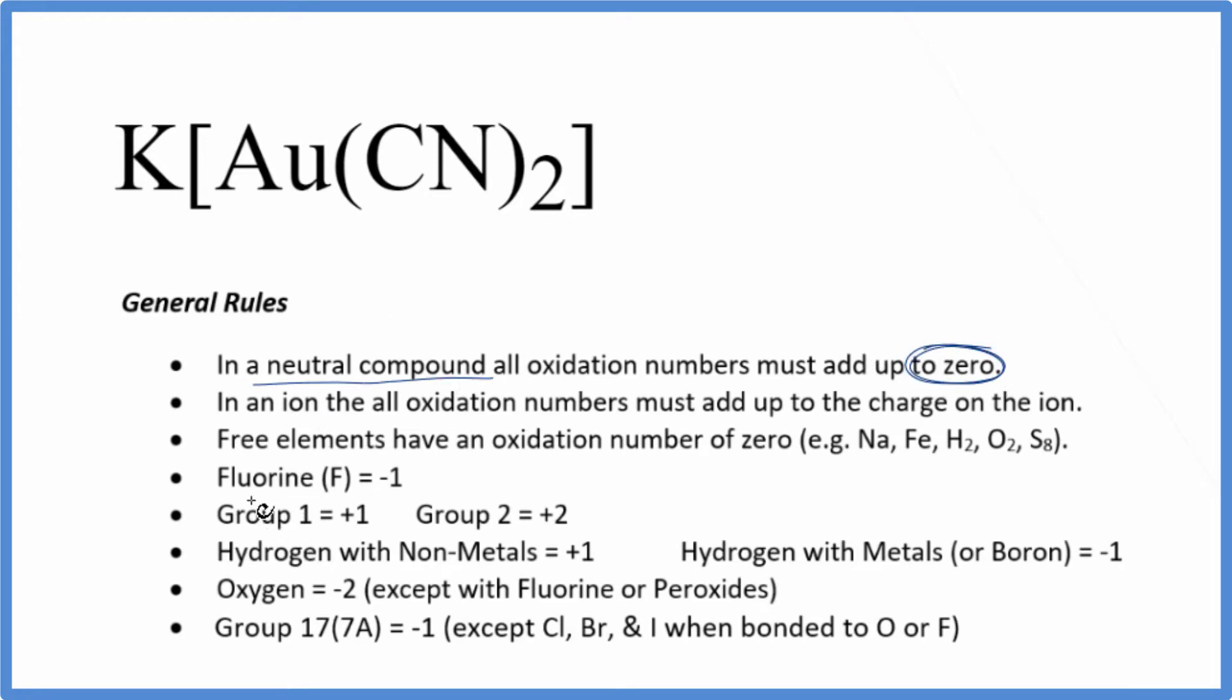We also know potassium is in Group 1 on the periodic table, so it'll have a +1 oxidation number. We don't know the gold—that's a transition metal.